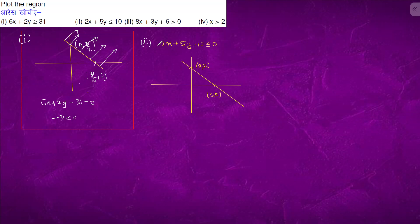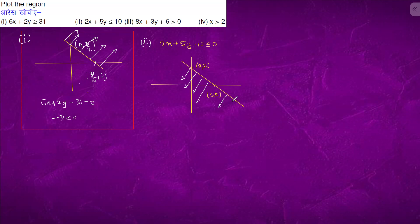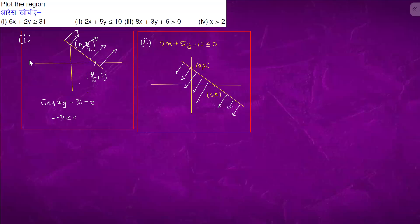When we put (0, 0) into this line, it becomes -10 ≤ 0, which is satisfied. So the origin side is the portion we are looking for. We'll go to question number three.